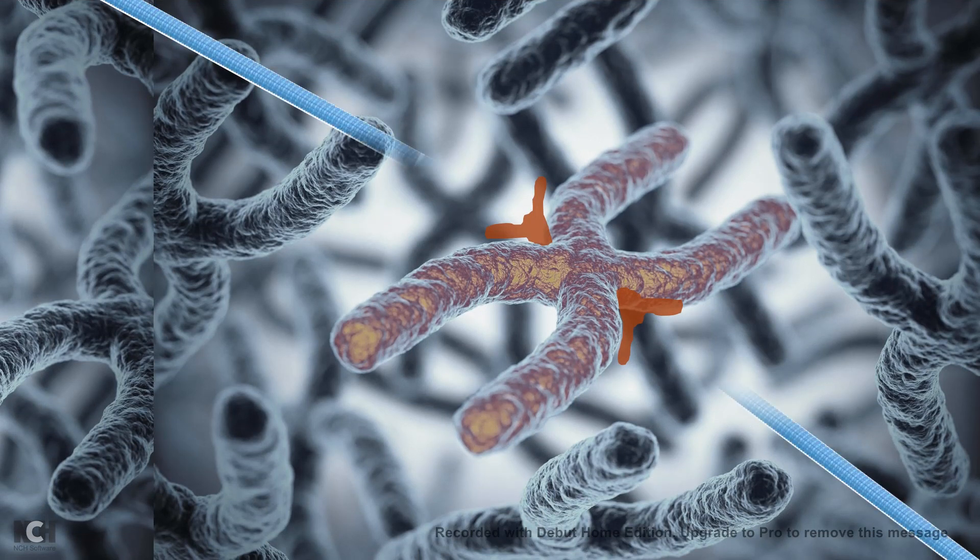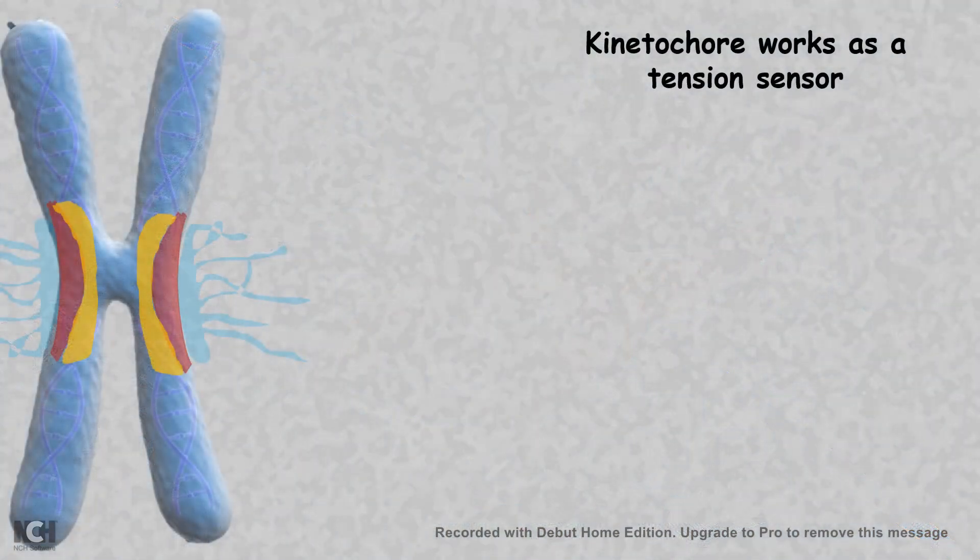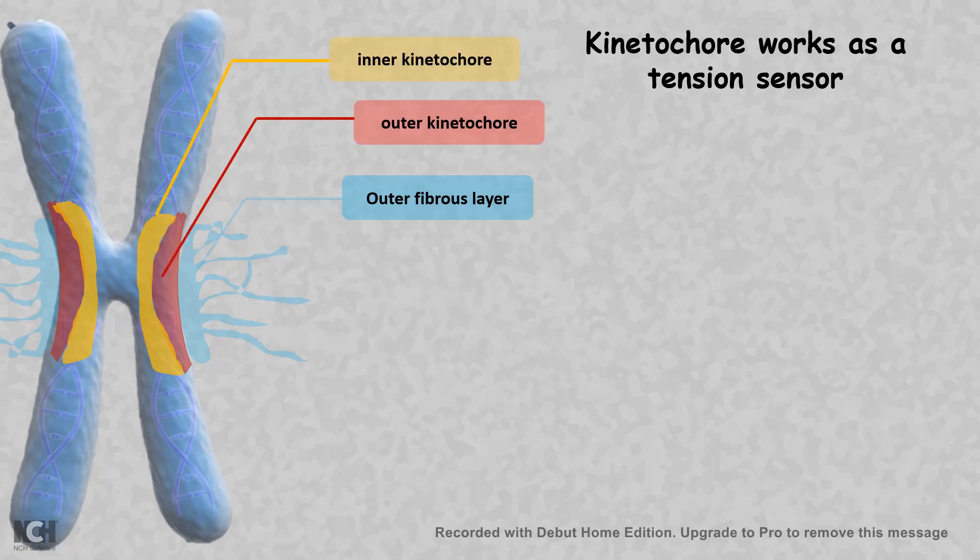Kinetochore is a specialized region at the chromosome. If you look at the structure of the kinetochore, we would see an outer fibrous layer, an inner kinetochore, and an outer kinetochore.